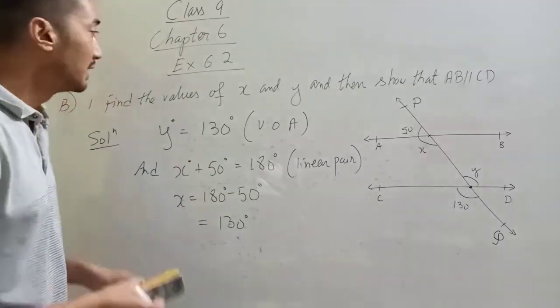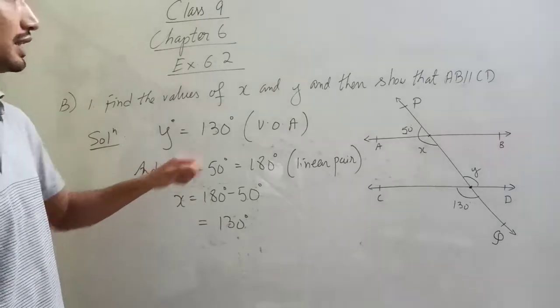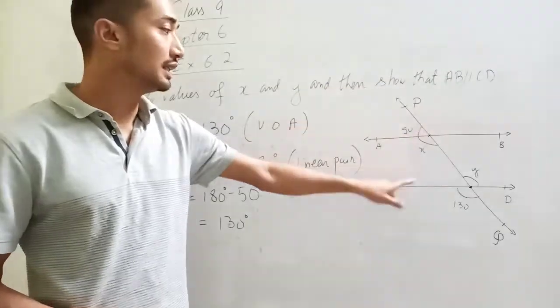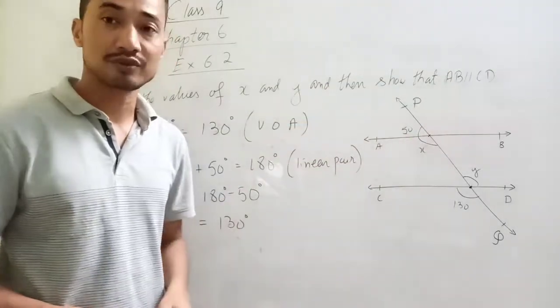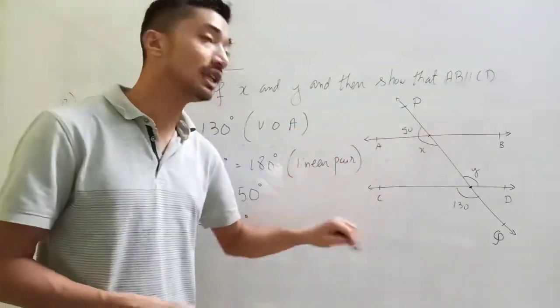Problem solved. Now the second part of the question is to prove that AB is parallel to CD.